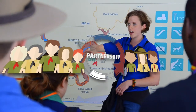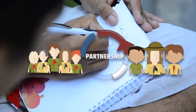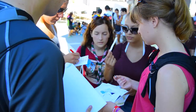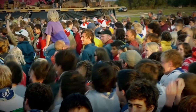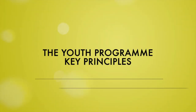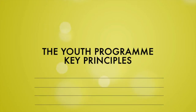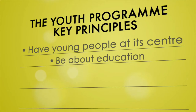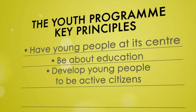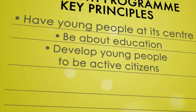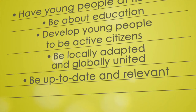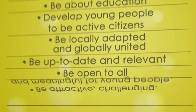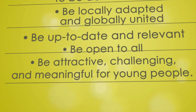The youth program should be everyone's job, and both adults and young people should work together in partnership. The last part of the policy contains the key principles, which state that the youth program should have young people at its center, be about education, develop young people to be active citizens, be locally adapted and globally united, be up-to-date and relevant, be open to all, and be attractive, challenging, and meaningful for young people.